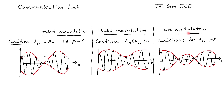For over modulation, the amplitude of the message signal is slightly greater than the carrier amplitude. Hence the modulation index observed is greater than 1, and noise will be present. Also, a phase reversal or phase shift will occur at the crossings.